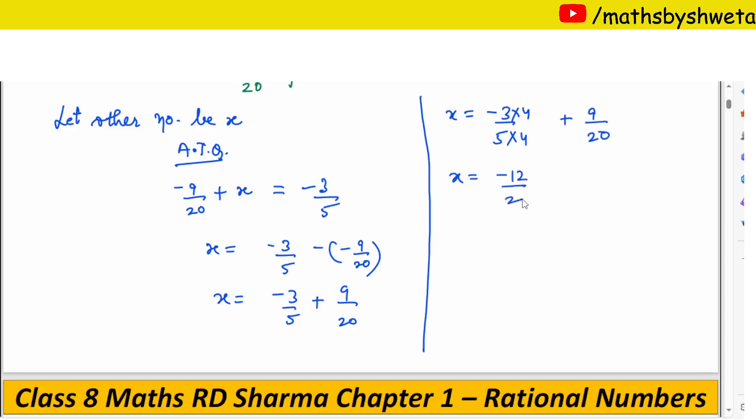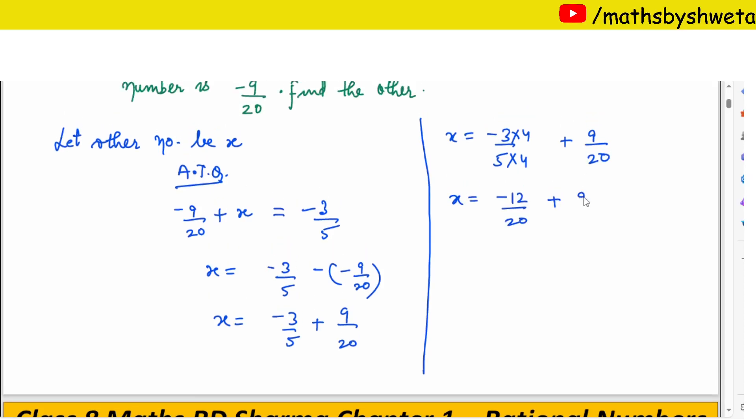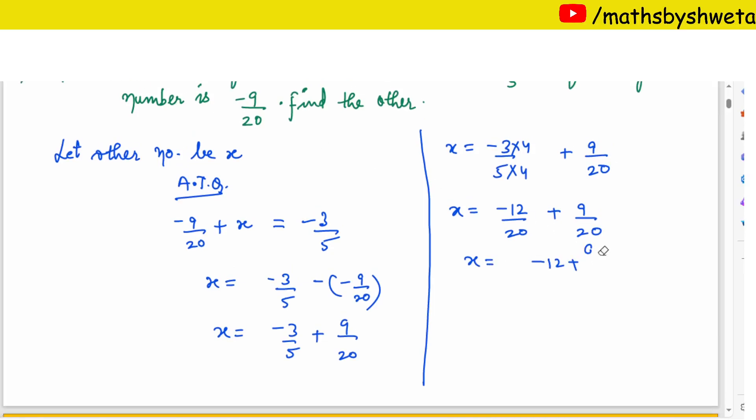Plus 9 upon 20. Now we can add. Minus 12 plus 9, when you solve it, minus 3 upon 20.